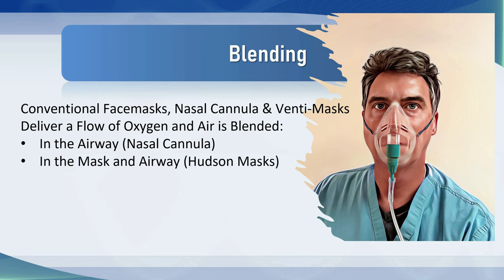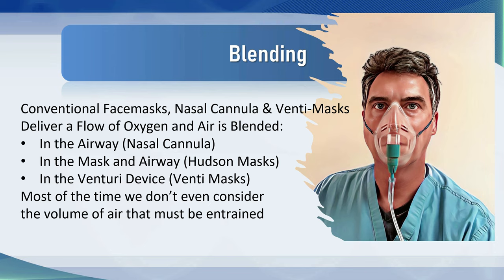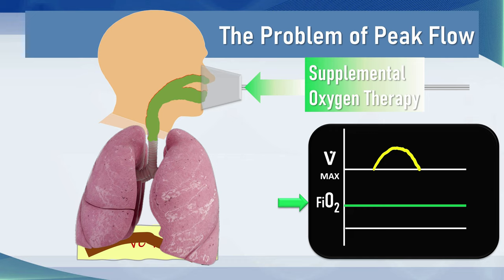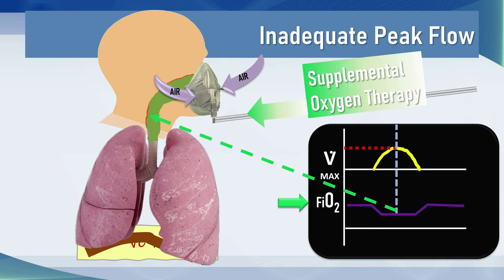Most of the time we don't consider the volume of air that must be entrained, but air must be entrained — if you're giving 40% oxygen, the remaining 60% the patient receives is nitrogen. It's really important that you know the volume of air and total flow because of the problem of peak flow. When the patient takes a breath, their peak flow must be matched by an FiO2 that stays stable. If it doesn't, the patient entrains more air during a big breath, the inspired oxygen tension drops, and this is hugely problematic.